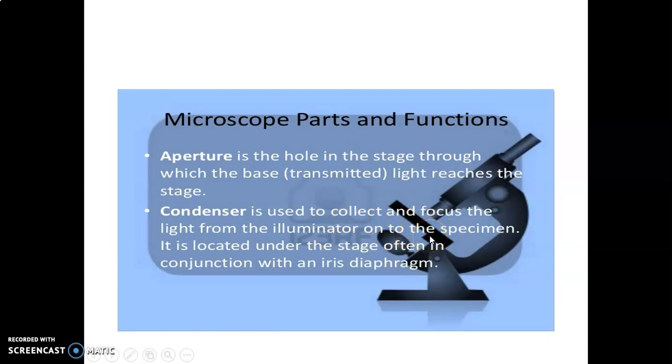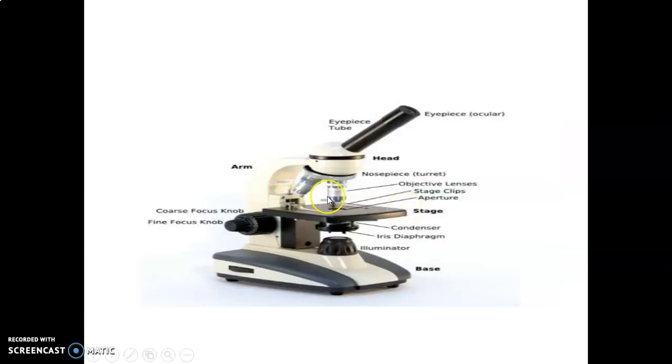Then we have a condenser. This usually focuses the light onto the specimen, so it condenses all the light rays and focuses it onto the specimen. It's usually located just below the stage together with the diaphragm.